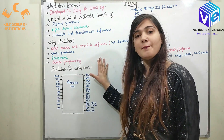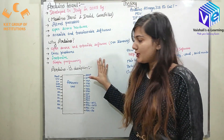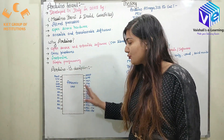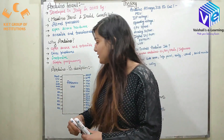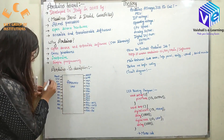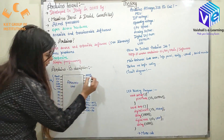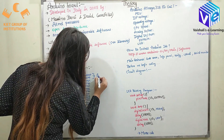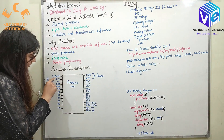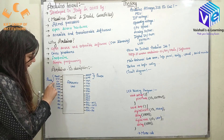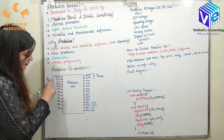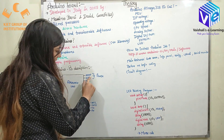Now coming to the pin description of Arduino board. We have various pins on the Arduino board which are shown here. We have some power pins here, and also these two pins are my power pins. The power pins are: reset, 3.3 volt, 5 volt, ground, ground, and input voltage. So we have two grounds here and one ground here.